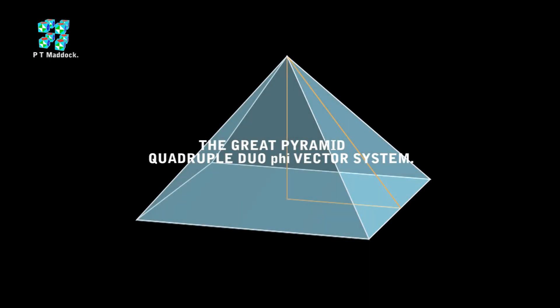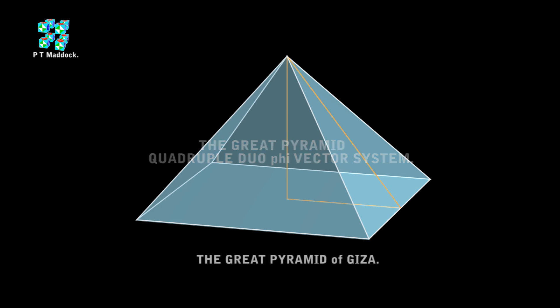Hi, this is Paul and I've got another new video to show you. I am calling this the Great Pyramid with a quadruple duo five vector system. I'm showing in front the Great Pyramid of Giza.